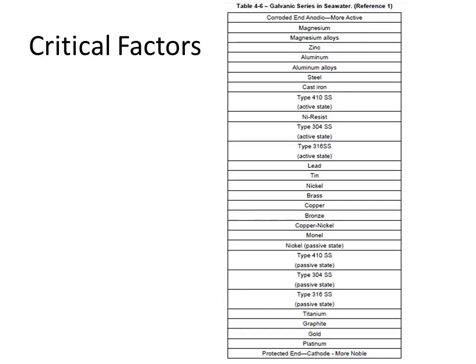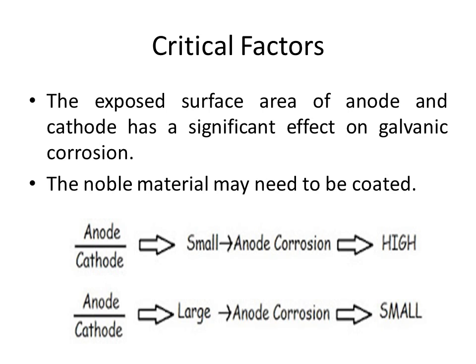Please refer to the galvanic table — the bottom is cathodic and the top is anodic. The farther apart two alloys are in the table, the higher the corrosion. For example, comparing type 304 stainless steel with steel versus type 304 stainless steel with lead — the corrosion of steel is greater than that of lead because steel is farther from 304 SS in the table. The exposed surface area ratio of anode to cathode has a significant effect: if the anode-to-cathode ratio is small, corrosion of the anode will be high. The noble material may need to be coated to reduce or nullify the cathode area, making the anode-to-cathode ratio larger and thereby reducing corrosion of the anode.